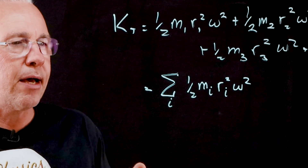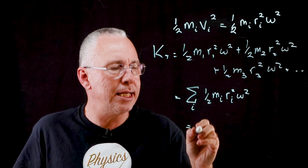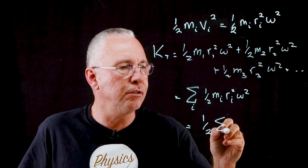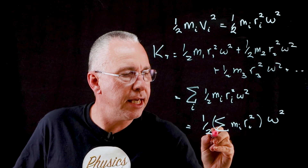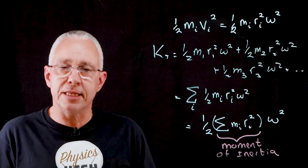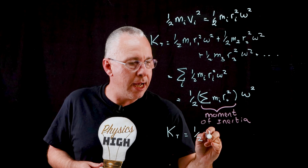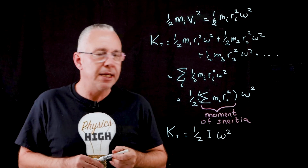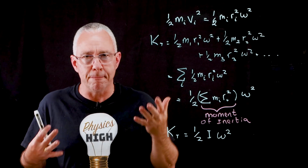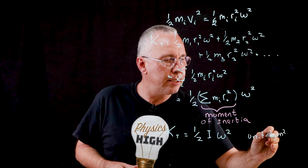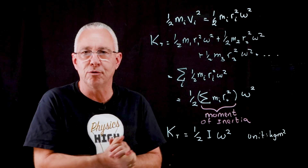What you can see here is that omega squared is constant across all particles, and the one half is also constant. So the total kinetic energy equals one half times the sum of m_i r_i squared, all multiplied by omega squared. This quantity — the sum of m_i r_i squared — is called the moment of inertia, I. Therefore, the kinetic energy of a rotating object is equal to one half I omega squared. The unit of moment of inertia is kilogram meters squared (kg·m²). To determine the moment of inertia you need to break the object down into its constituent parts, which can be challenging for irregular objects.